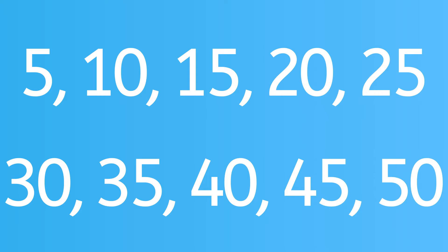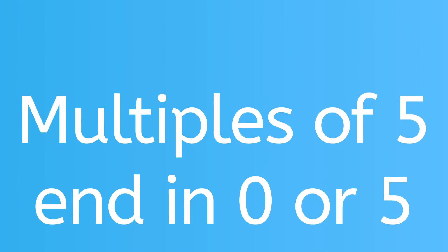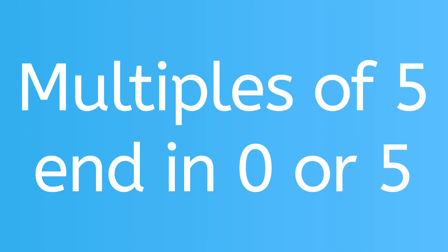Some numbers are especially easy to multiply — you may already be able to do it and not even know it. For instance, if you can count by 5's, you can multiply by 5. All multiples of 5 have to end in a 0 or a 5. In a similar way, all multiples of 10 have to end in a 0, like 10, 20, and 30.